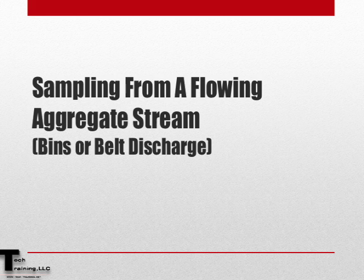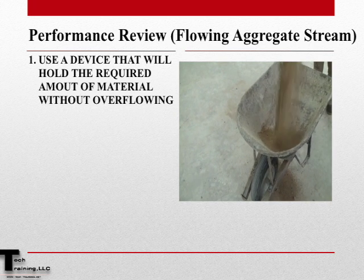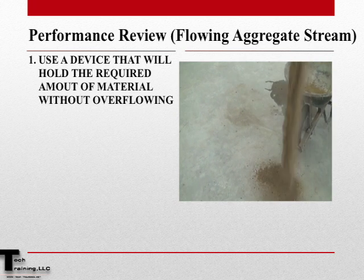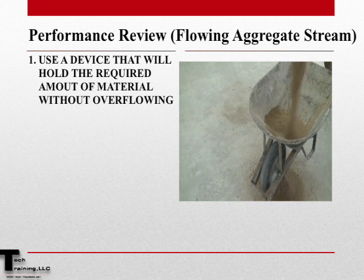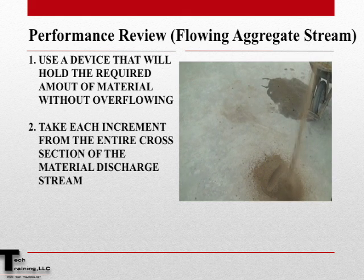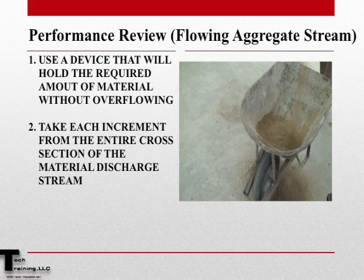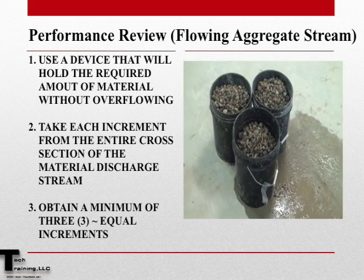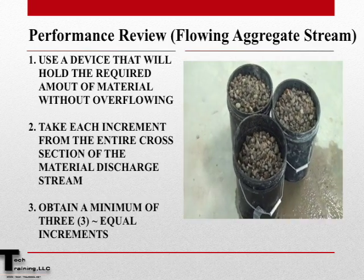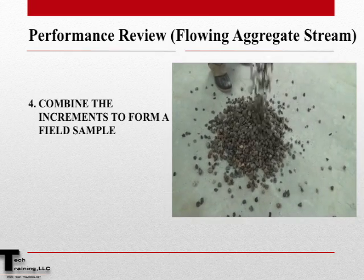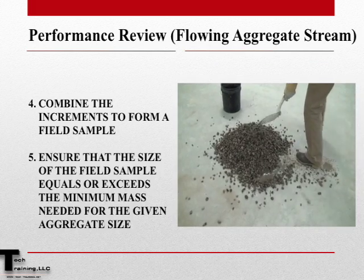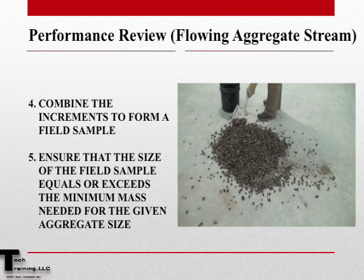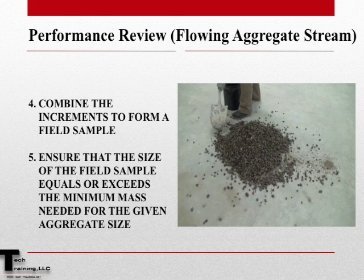Let's now review sampling from a flowing aggregate stream. When sampling from a flowing aggregate stream, be sure to use a device which will hold the required amount of material without overflowing. Take each increment from the entire discharge stream. Obtain a minimum of three equal increments, then combine these increments to form your field sample. Ensure that the size of the sample meets or exceeds that which is required for a given aggregate size.